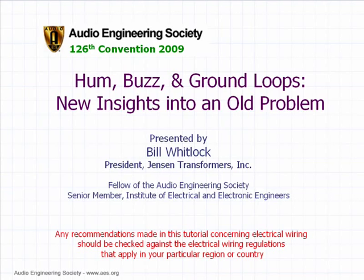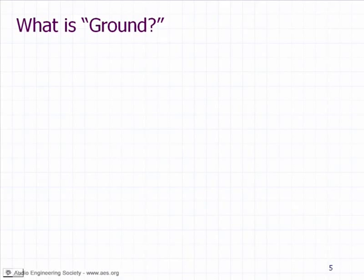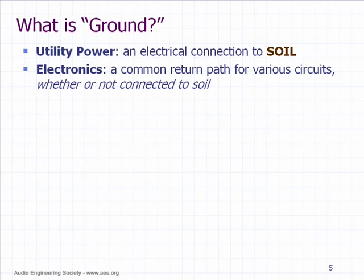My background is as an analog circuit designer. One of the things we have to deal with is the word 'ground' — over here you'll call it 'earth.' Earth has a definition that depends on who you ask. A utility engineer working on high voltage power lines will define it as literally involving dirt and soil — real earth. But in electronics, we use that same word to refer to a common return path. A portable transistor radio has an earth.